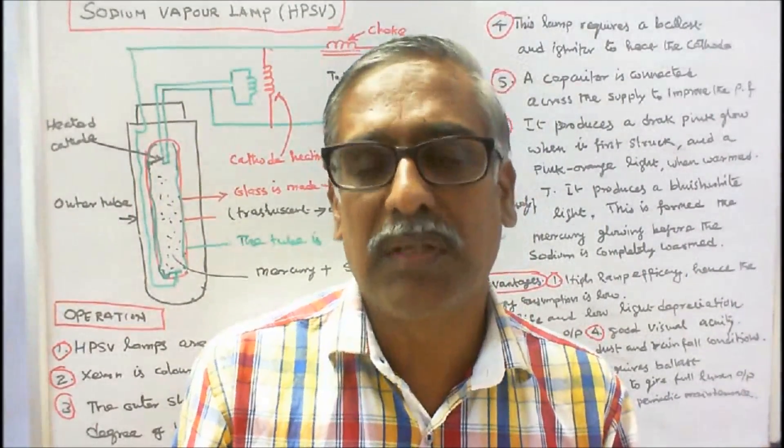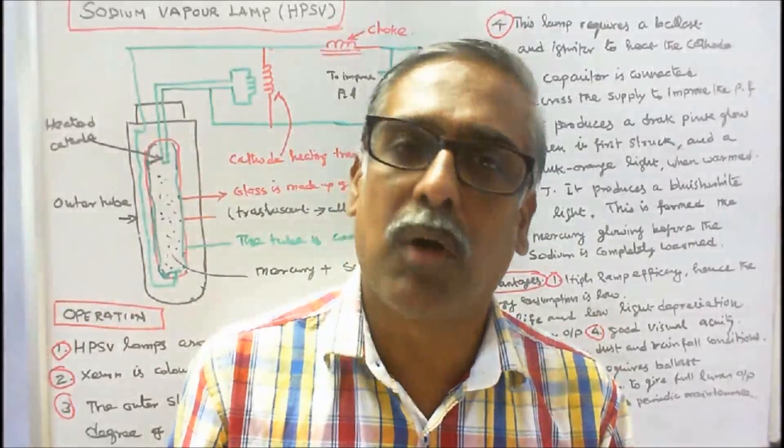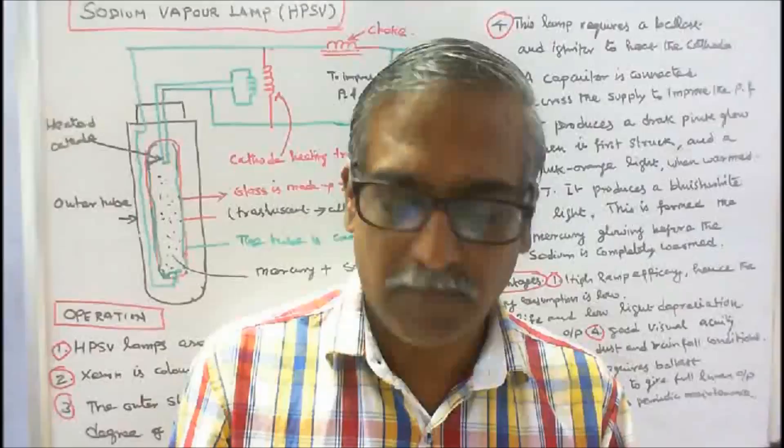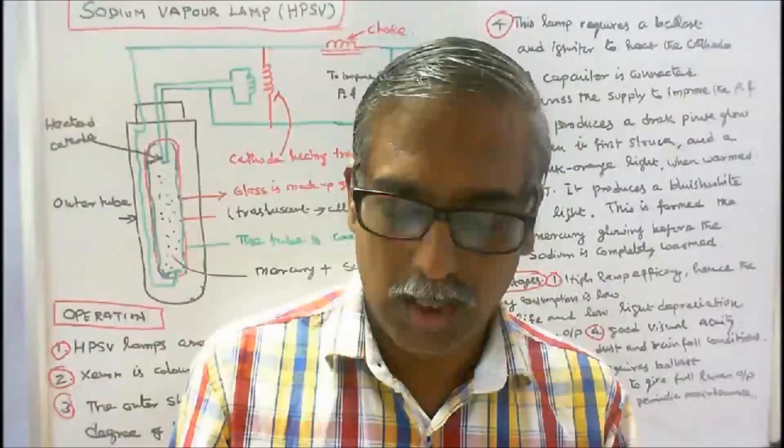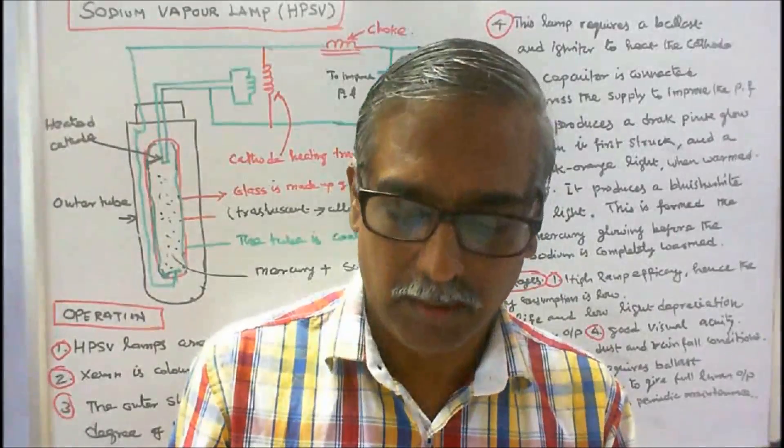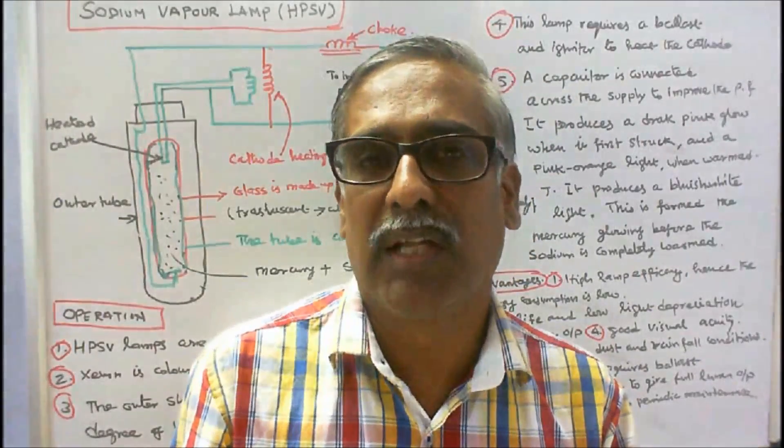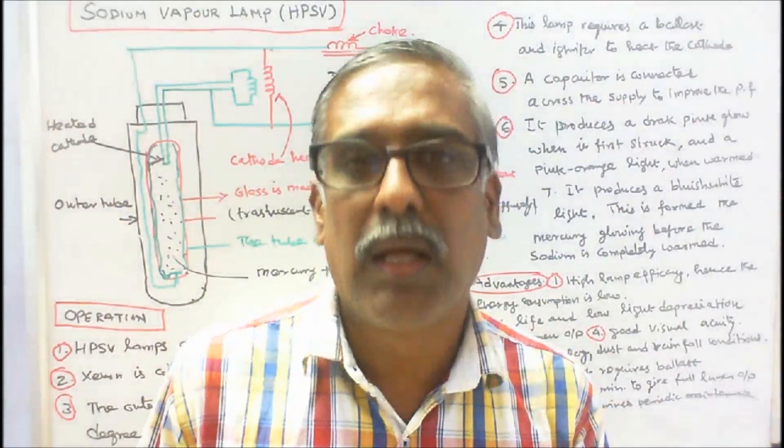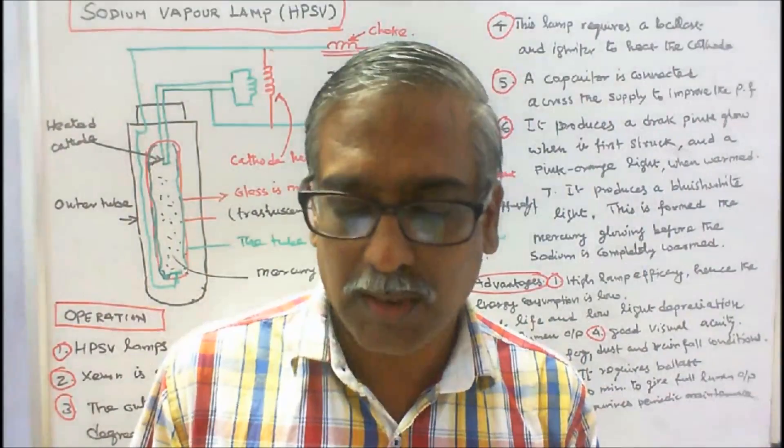His work helped pave the way for William Louden, Kurt Schmidt, and Elmer Homeneu to invent high pressure sodium vapor lamp. General Electric first developed this lamp and it came on the market in 1964.